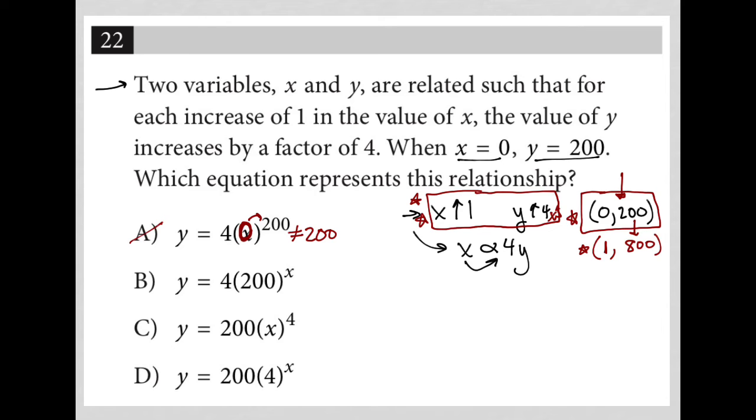For choice B, if x were 0, 200 to the 0 power is just 1. That is also not going to be equal to 200. It'll be equal to 4, so B is gone.